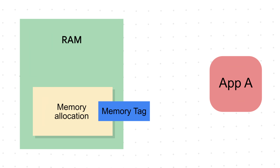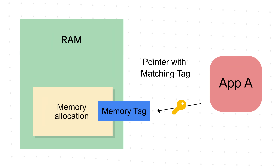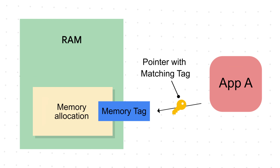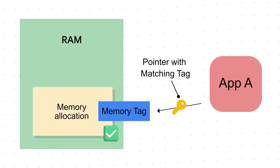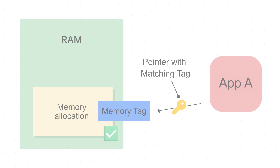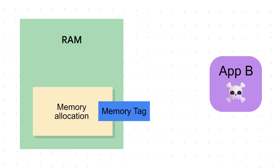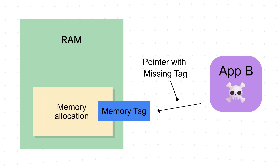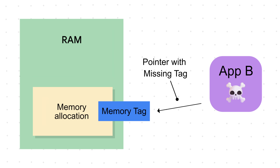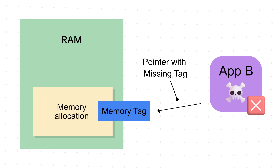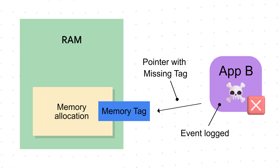When MTE is enabled, every single memory allocation is tagged with a secret, and then the hardware ensures that every future request from an app to access a certain memory allocation is only granted if the request contains that same secret, which only the app that made the original allocation request would have. If the request doesn't contain the secret — for example, because it came from an app other than the one that made the allocation in the first place — then the app making the request is crashed, and the event is logged by the operating system.